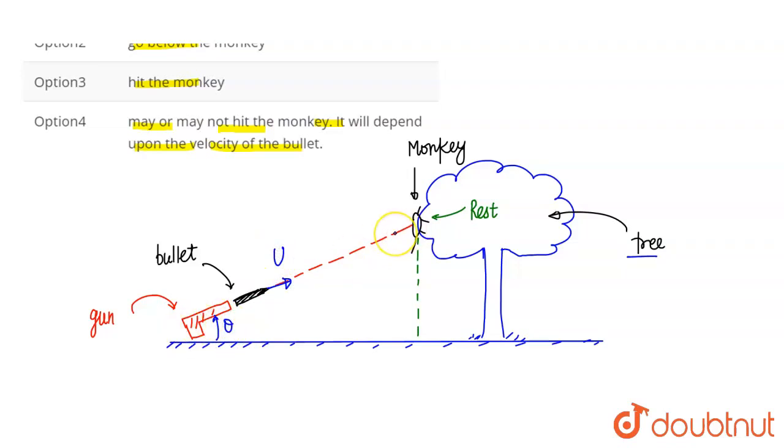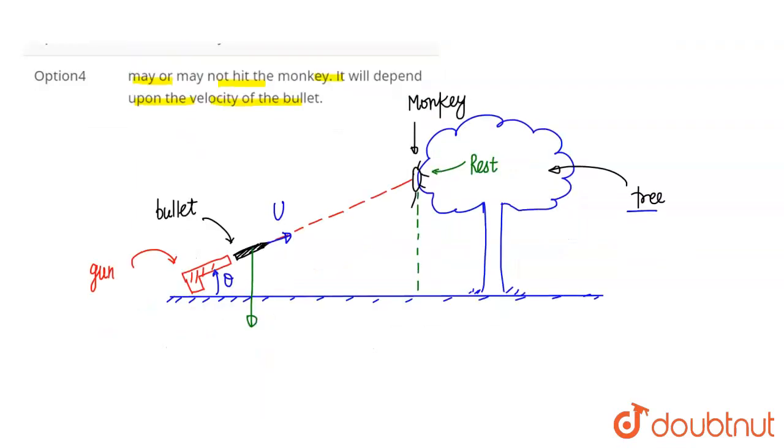The gun fires the bullet at angle theta. This bullet has acceleration due to gravity in downward direction. This is a projectile motion question. In projectile motion, acceleration is in the vertical downward direction and this is due to gravity. If the monkey is at rest, the bullet will not hit because the bullet goes in a downward direction.